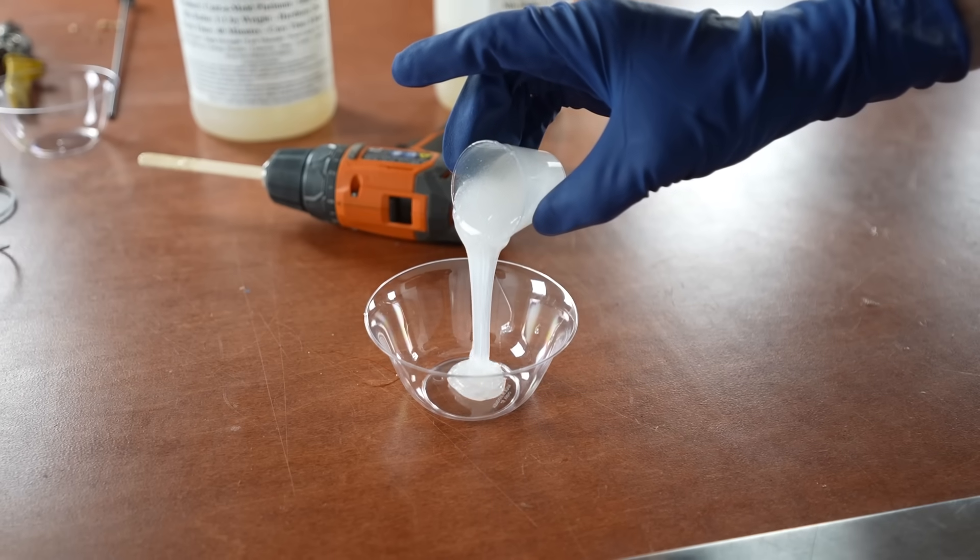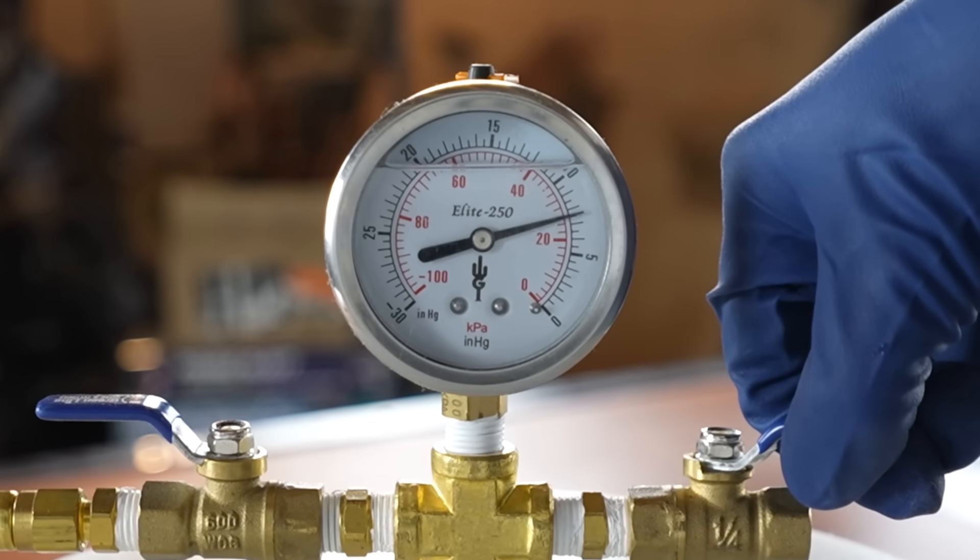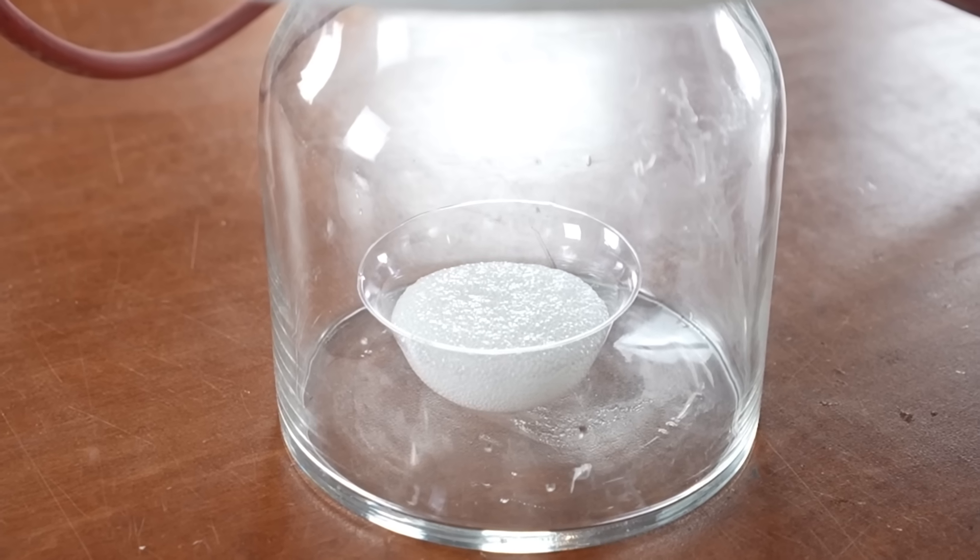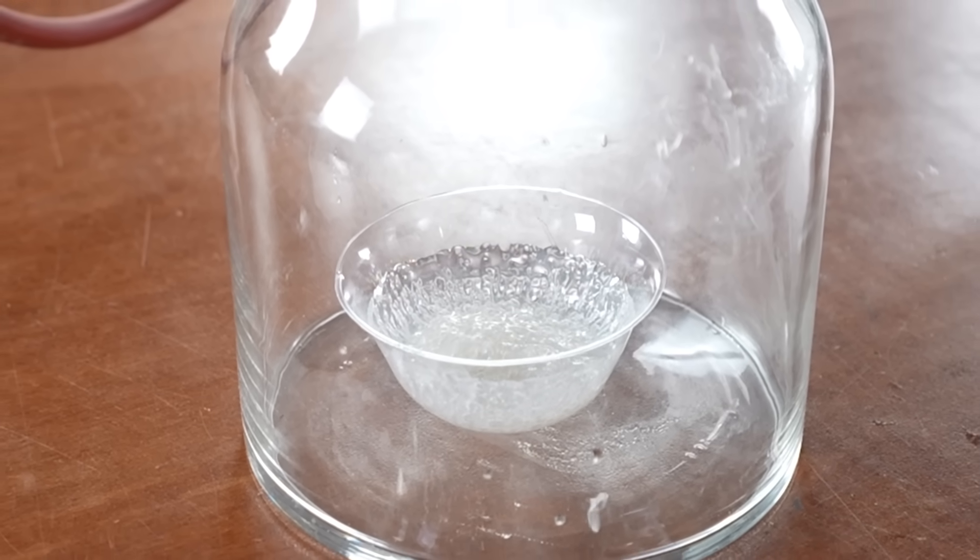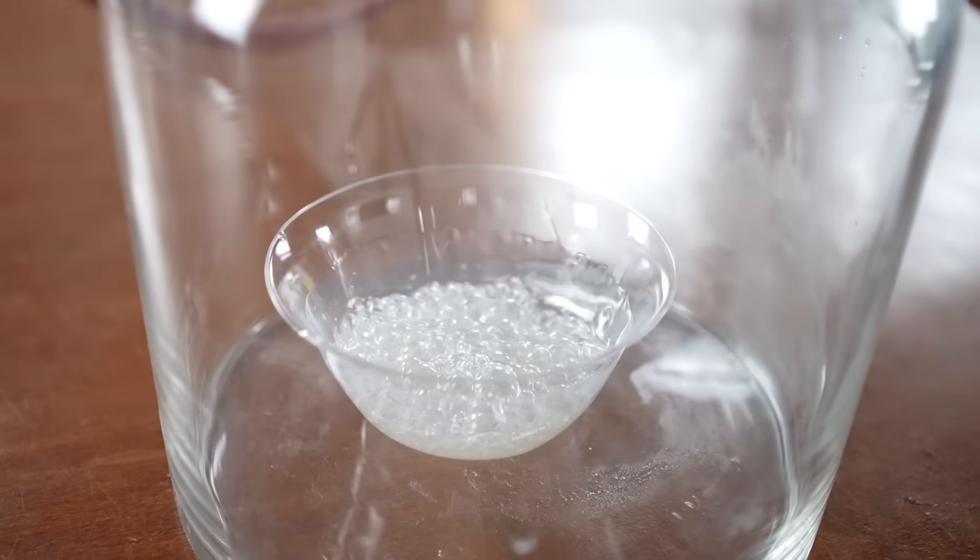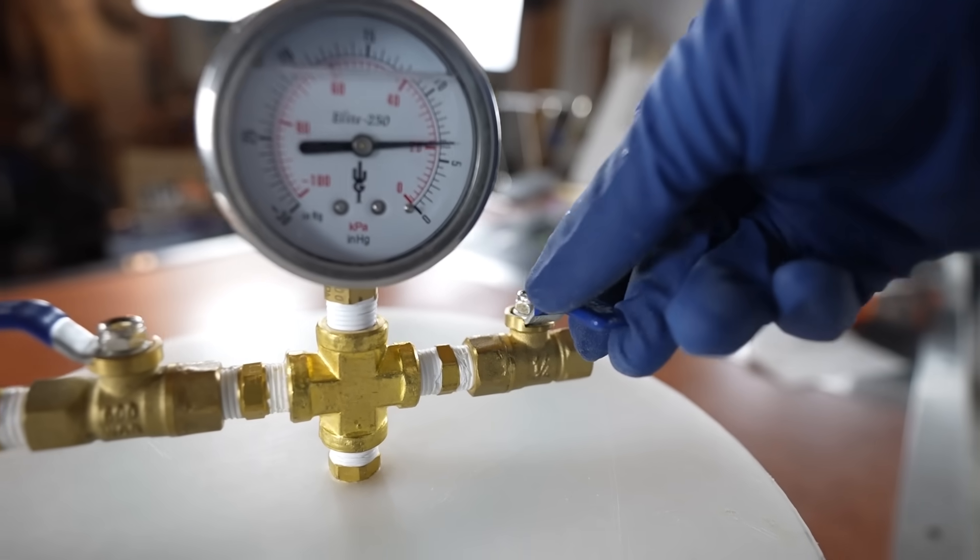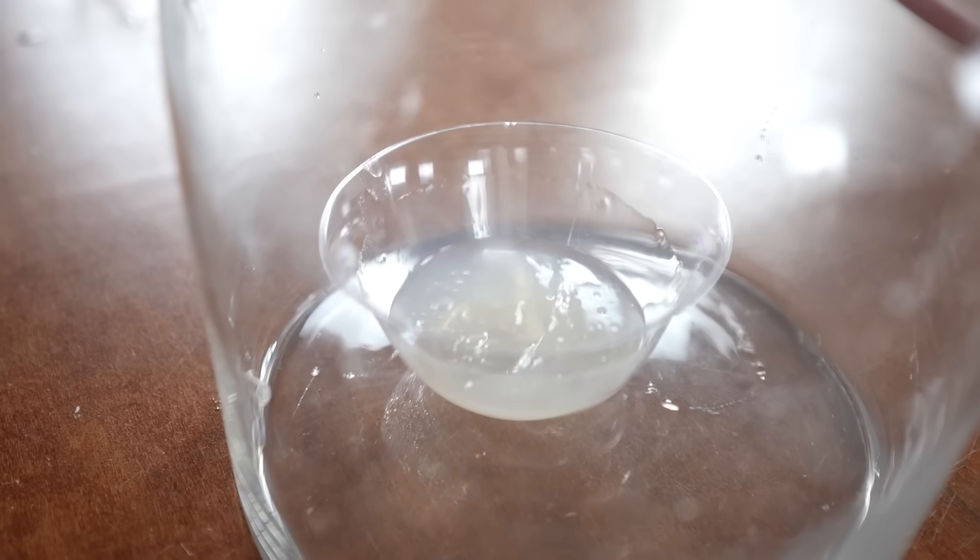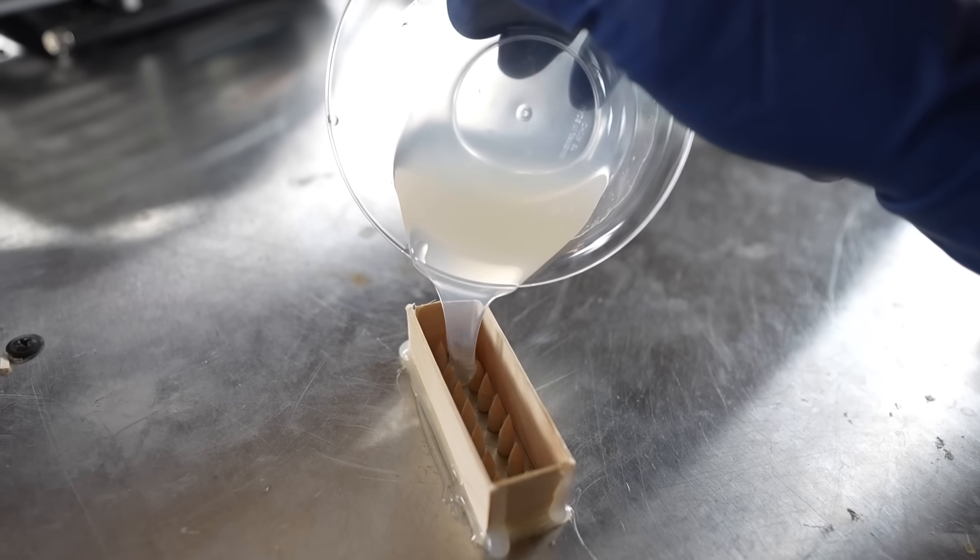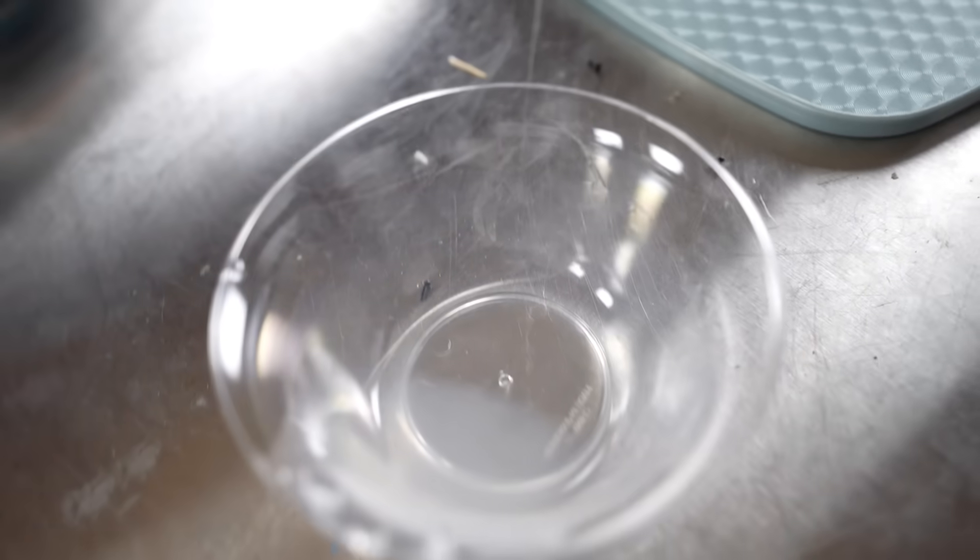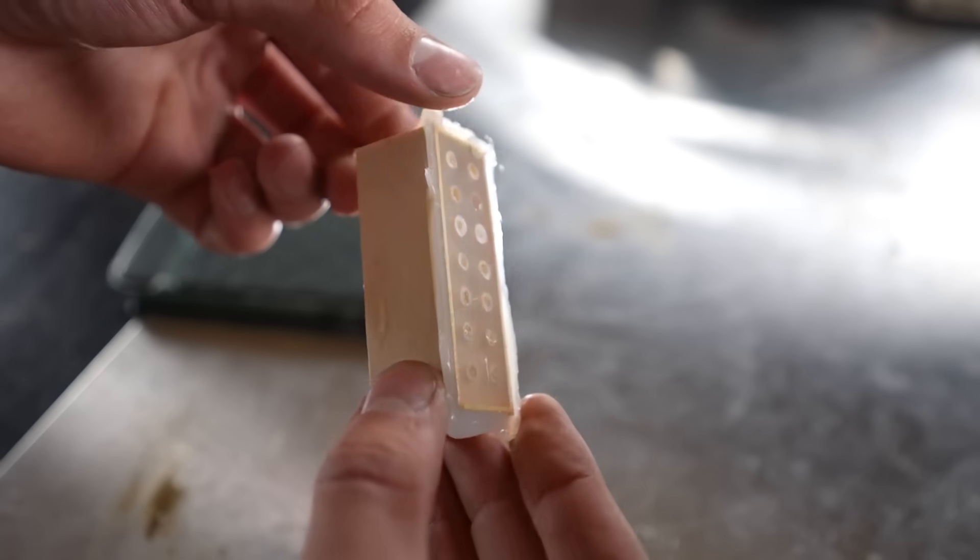After mixing the silicone it had a ton of air bubbles so I placed it in a vacuum chamber to remove the air. After 24 hours the silicone cured and I was left with a pretty perfect mold to create the ice ammo.